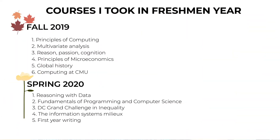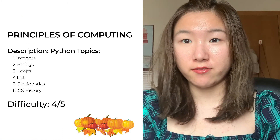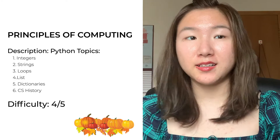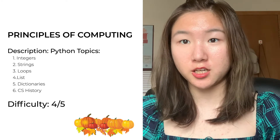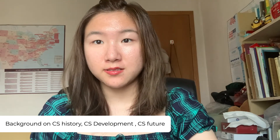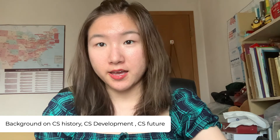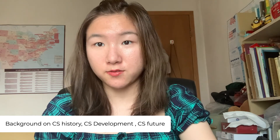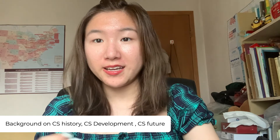In the fall 2019 semester, I took a total of six classes. The first class is a computer science class — an introductory level course using Python to teach basic data structures and computer science history. The main topics included integers, strings, loops, lists, and dictionaries. There was also background information about CS history, CS development, and probably CS future, which was really interesting content to intrigue more people into future computer science classes.